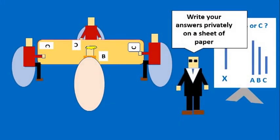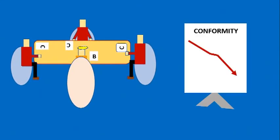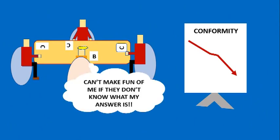In another variation, Solomon Asch allowed the participants to give their answer privately on a piece of paper. In that scenario, conformity drastically decreased. One explanation for this phenomenon could be that as the participants are now able to give their answer privately, no one else would know their answer, and hence, the participants would no longer be in danger of being made fun of.